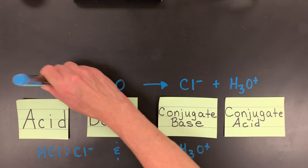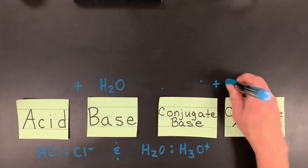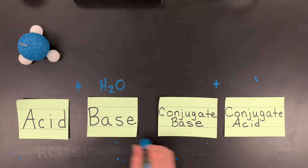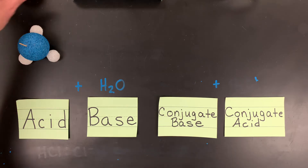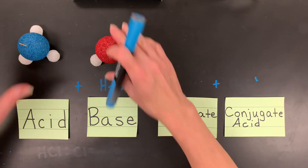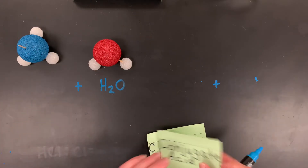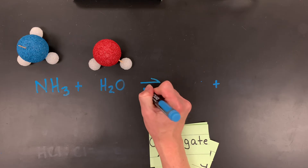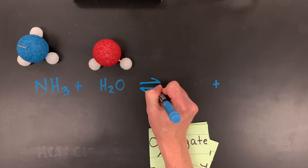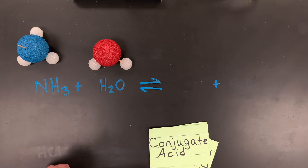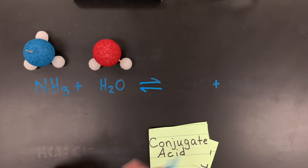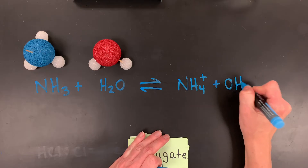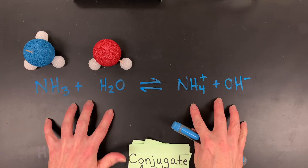Now we're going to switch this out with ammonia, but keep water. So this is ammonia. It is a weak acid or base, so it's going to have a double arrow reaching chemical equilibrium — I have a video on that if you've never heard of chemical equilibrium. On the product side, it's going to have ammonium ion and hydroxide ion. Make sure you have those charges so that the reaction is neutral on both sides.